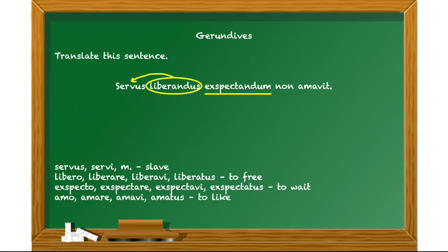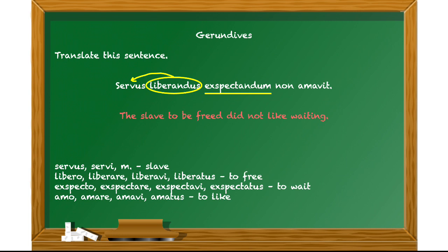Take a moment and see if you can translate this sentence. You should have come up with: 'The slave to be freed did not like waiting.' 'Liberandus' is the adjective — like what kind of slave? You could have said 'the tall slave' or 'the Greek slave'; in this case it's the 'to be freed' slave. What did he not like? He did not like waiting. You could just as well say he did not like dogs or pizza. 'Wait' is a verb, but here it's functioning as a verbal noun. And that's what gerunds and gerundives are all about.